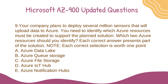Question 9. Your company plans to deploy several million sensors that will upload data to Azure. You need to identify which Azure resources must be created to support the planned solution. Which two Azure resources should you identify? Each correct answer presents part of the solution. Note: each correct selection is worth 1 point. A. Azure Data Lake. B. Azure Queue Storage. C. Azure File Storage. D. Azure IoT Hub. E. Azure Notification Hubs.